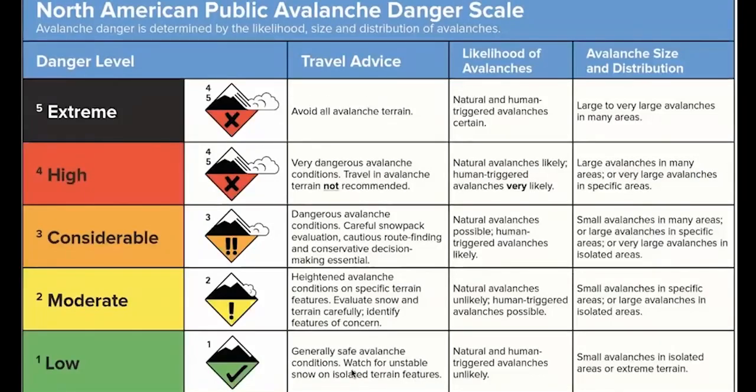Low danger, right? The travel advice is generally safe. Avalanche students should watch for unstable snow and isolated terrain features. But what does that really mean? What is an isolated terrain feature? It's generally something that's very few and far between in the terrain. If the forecasters call it low danger, sometimes they can describe it, and sometimes they can't even describe the exact terrain.